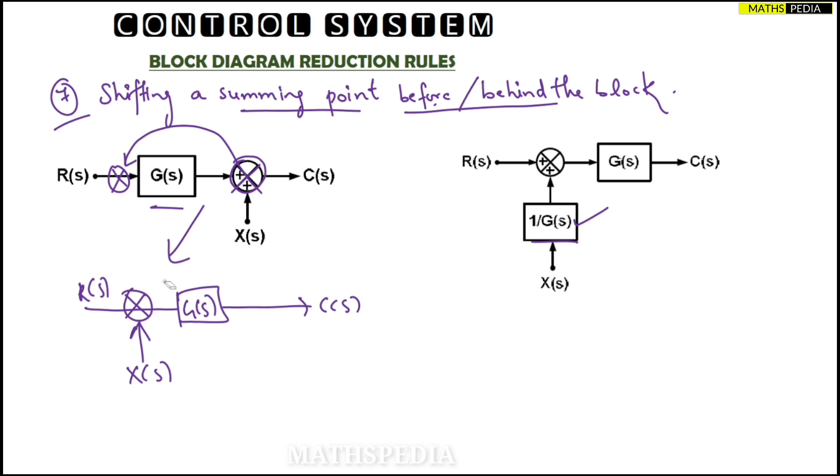So what I can observe is that when you shift there, the rule is that an X(s) signal is there. I have to add one block in series with this X(s) signal that should contain the transfer function reciprocal, so 1/G(s). I have to add reciprocal of this transfer function, that is 1/G(s).